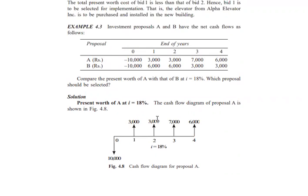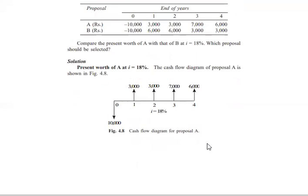Next example: Investment proposals A and B have net cash flows as follows. For proposal A: year 0 = -10,000; years 1,2 = 3,000 each; year 3 = 7,000; year 4 = 6,000. For proposal B: year 0 = -10,000; years 1,2 = 6,000 each; years 3,4 = 3,000 each. Compare the present worth of A and B at 18%. The cash outflows point downward and inflows point upward in the diagram.